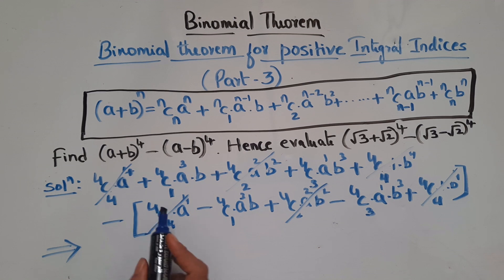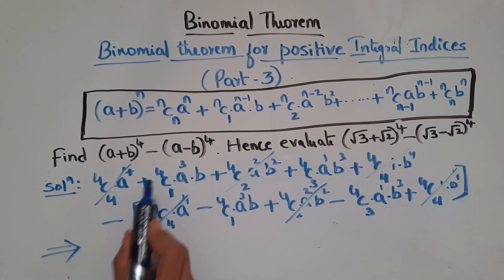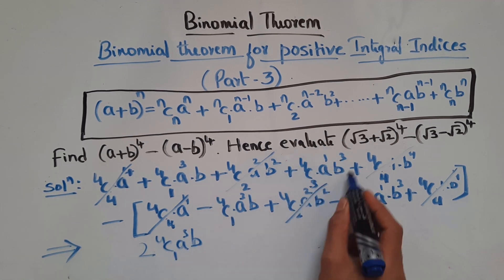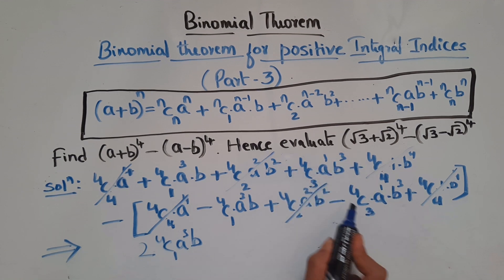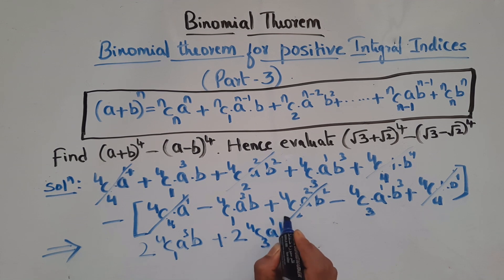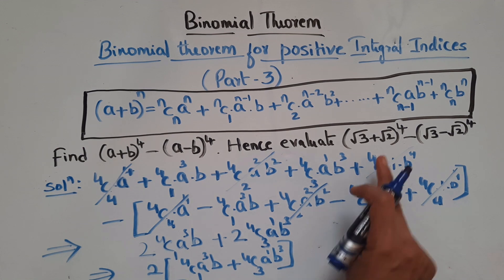What we are left with: 4C1·a³·b appears in both, and minus of minus is plus, so we get two of them. Similarly 4C3·a·b³ appears in both, and minus of minus is plus, giving two of them. Taking 2 common: (a+b)⁴ - (a-b)⁴ = 2[4C1·a³·b + 4C3·a·b³].